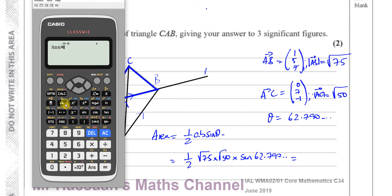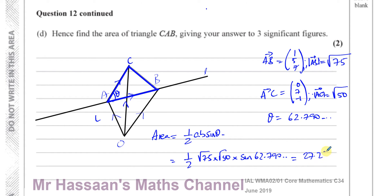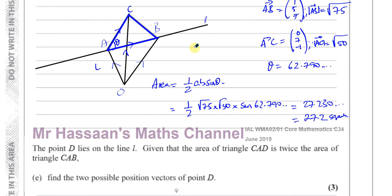I've got that part now. I've got to multiply that by root 75 and multiply that by root 50, and also multiply by 0.5. That will give us 27.230... It says three significant figures, so that's going to give me 27.2 square units. So there we have the area to three significant figures of our triangle ABC.